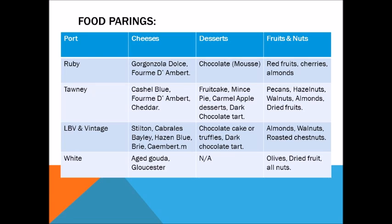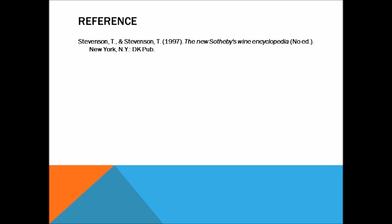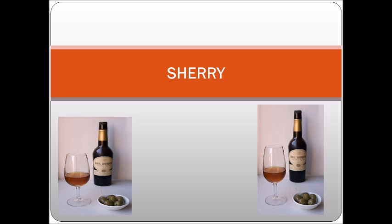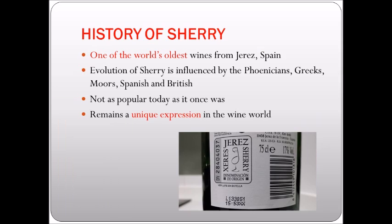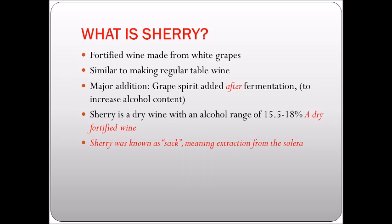The soil of Alsace: limestone, granite, schist, and sandstone. Viticulture: vines are trained high on wires to prevent frost. Different varietals are harvested at different times. Organic and biodynamic procedures are used.